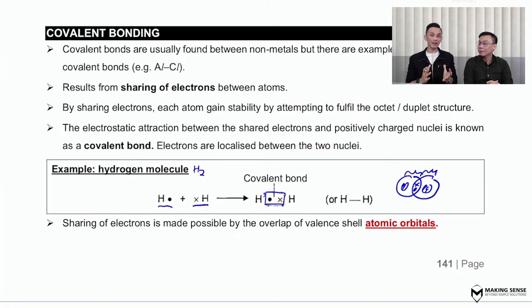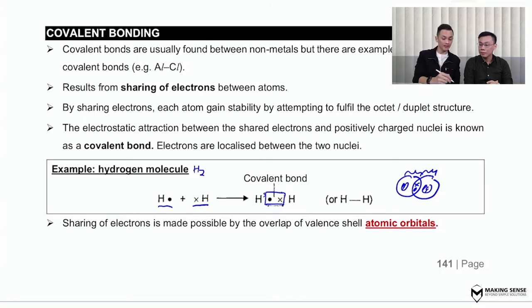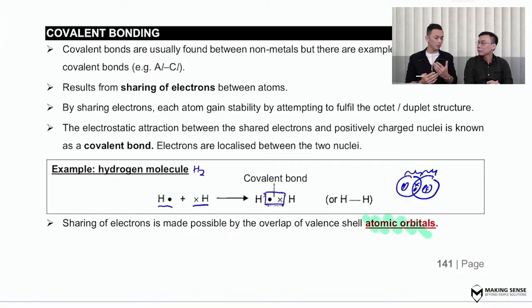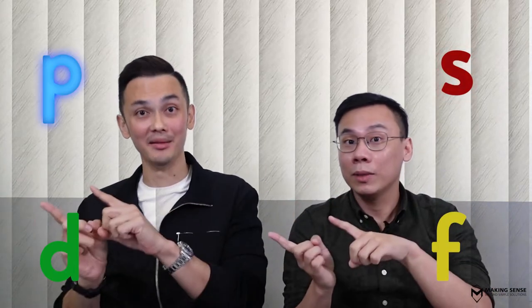The covalent bond is formed by this thing called the sharing of electrons. But there's something new — it says over there, the sharing of electrons is made possible by the overlap of atomic orbitals. Atomic orbitals is something learned in the chapter called atomic structure, which means they have to revisit the shape of the orbitals. The shapes we have are the s orbital, the p orbital, the d orbital, and the f orbital. But just for today's lesson, the only things we are going to require will be the s orbital and the p orbital.